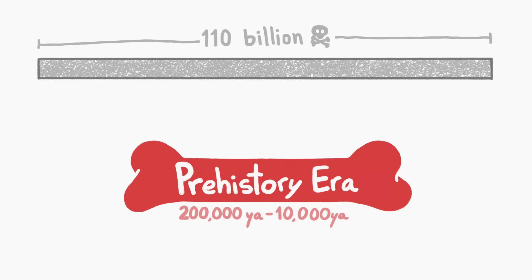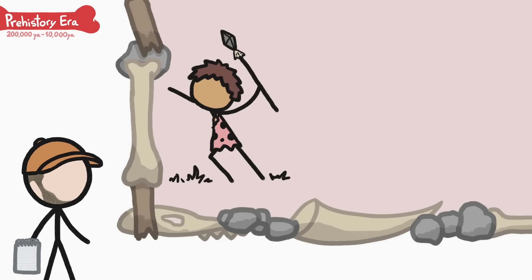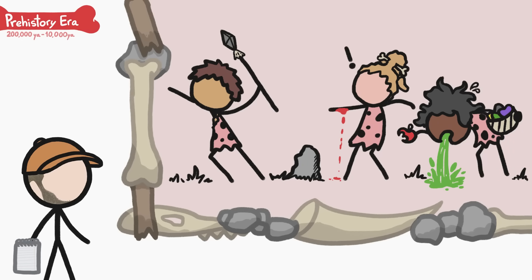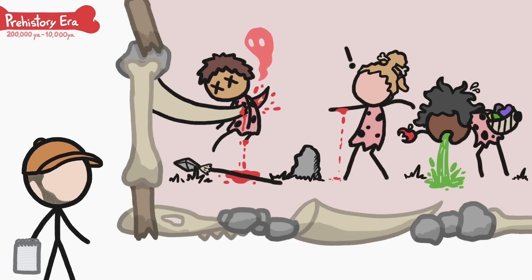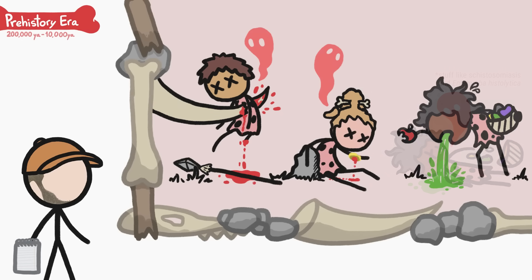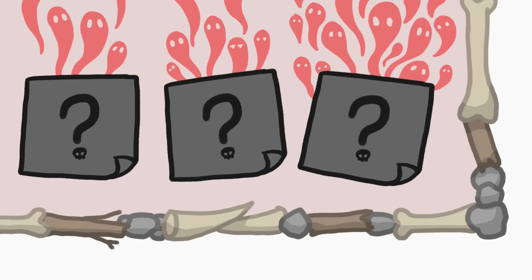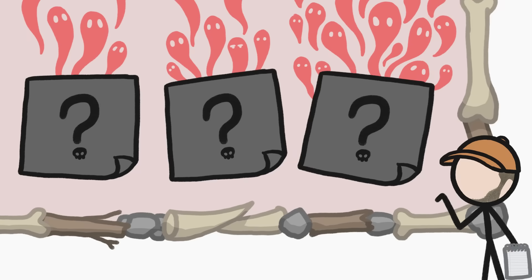Let's start with the prehistory era, during which about 10 billion people lived and died. These hunters and gatherers lived rough-and-tumble lives without any real sanitation, so a lot of them died from injuries, infected wounds, and parasites. Then there were also three other big killers, which we'll get to a bit later.